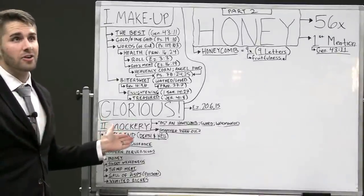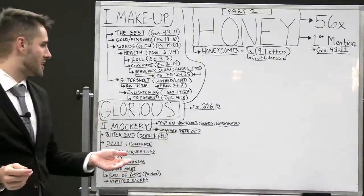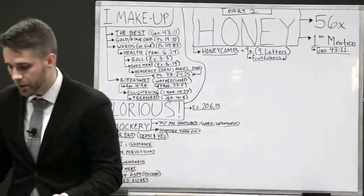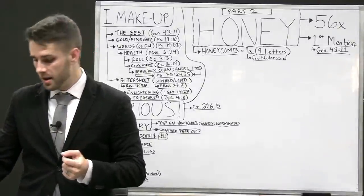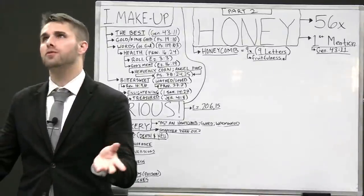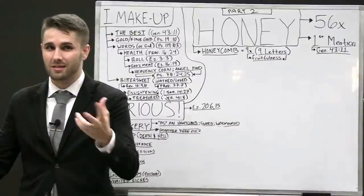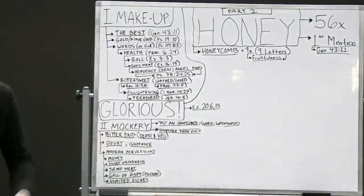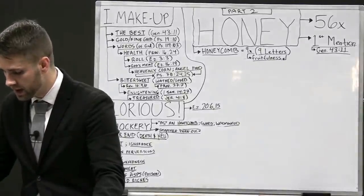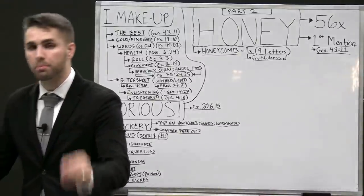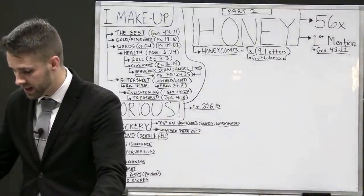In 1 Samuel 14, it's enlightening. Jeremiah 41:8, it's treasured. And Ezekiel 20, verse 6 and verse 15, honey is referred to as the glory of all lands. So this thing is a special substance, this honey thing. And the application I'm making is that it's the word of God. This honey thing has to do with the words of God. We went through the makeup of honey, what it is. We also went through the mockery of honey, what it is not.